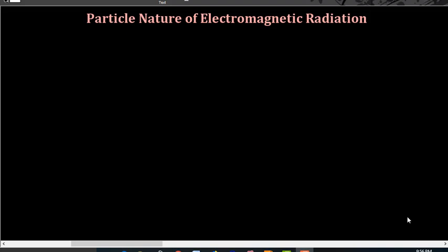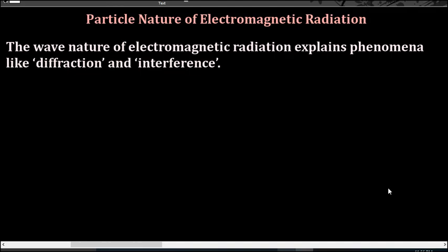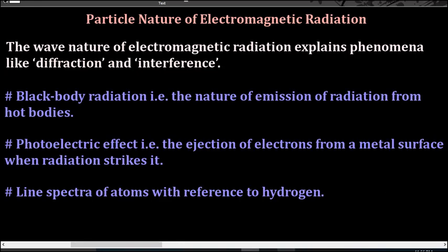In the previous video we learned about the wave nature of electromagnetic radiation. The wave nature of electromagnetic radiation explains phenomena like diffraction and interference, but it fails to explain some other phenomena such as the black body radiation — that is, the nature of emission of radiation from hot bodies — and the photoelectric effect, that is the ejection of electrons from a metal surface when radiation strikes it.